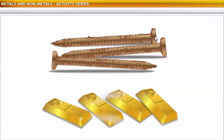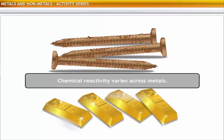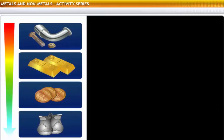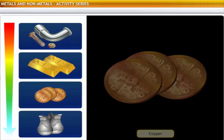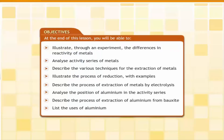Gold never rusts because, unlike iron, it does not react with atmospheric oxygen. This is because chemical reactivity varies across metals. Scientists have arranged metals in a series based on their chemical reactivity. In this lesson, you will learn about the arrangement of metals in an activity series based on their reactive properties. You will also learn how the positions of metals in an activity series impact the process of extraction from their respective ores.